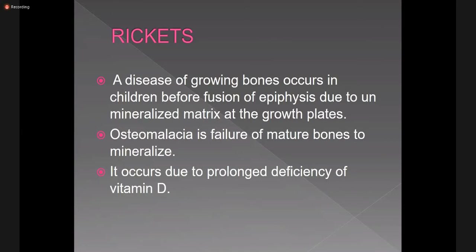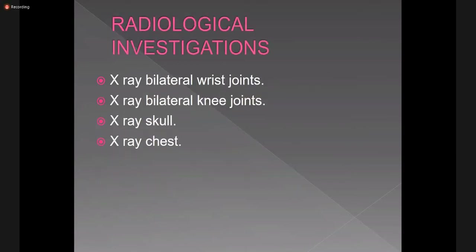In osteoporosis, bone matrix is normal with normal mineralization, but there is imbalance between osteoclastic and osteoblastic activity. While in rickets there will be unmineralized matrix at the growth plates due to vitamin D deficiency. Whether rickets is due to vitamin D deficiency or vitamin D resistant rickets, the imaging features remain the same. Radiological investigations for rickets include X-ray bilateral wrist joints and X-ray bilateral knee joints. X-ray skull and X-ray chest are also done.